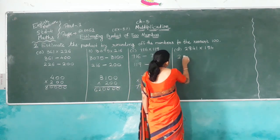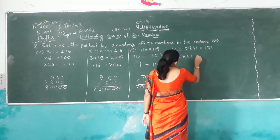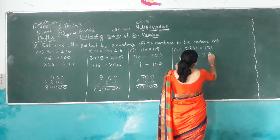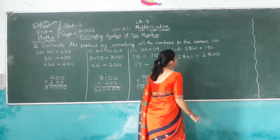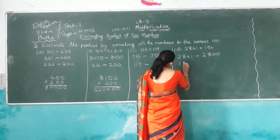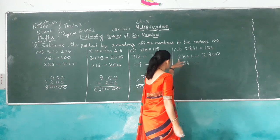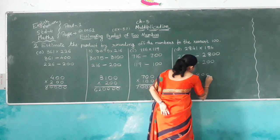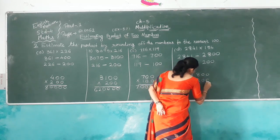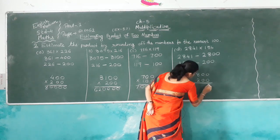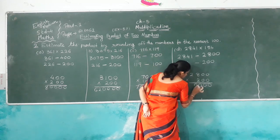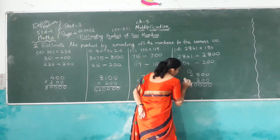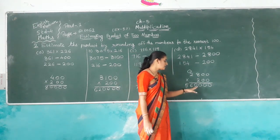Another one: 2,841 — tens digit is 4, less than 5, so nearest 100 is 2,800. Then 164: tens digit is 6, so add 1: nearest 100 is 200. Multiply 2,800 by 200 — keep 2 zeros. 2 times 0 is 0 (multiple times), 2 times 8 is 16, carry 1. 2 times 2 is 4, plus 1 is 5. So answer is 560,000.